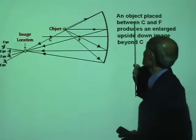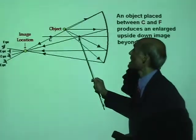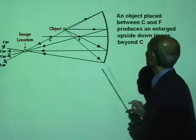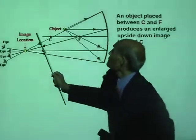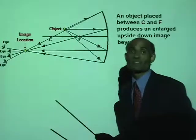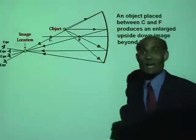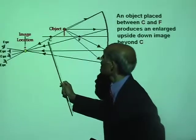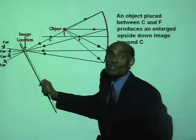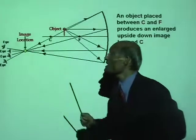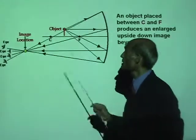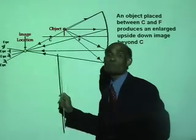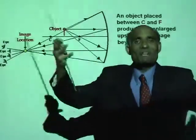An object placed between C and F — the center of curvature and the principal focus — has its image formed beyond C, and it is upside down. And the image looks bigger than the object — the image is magnified.